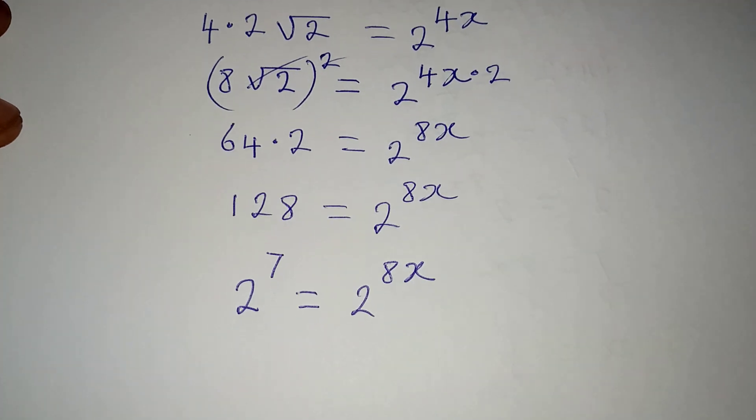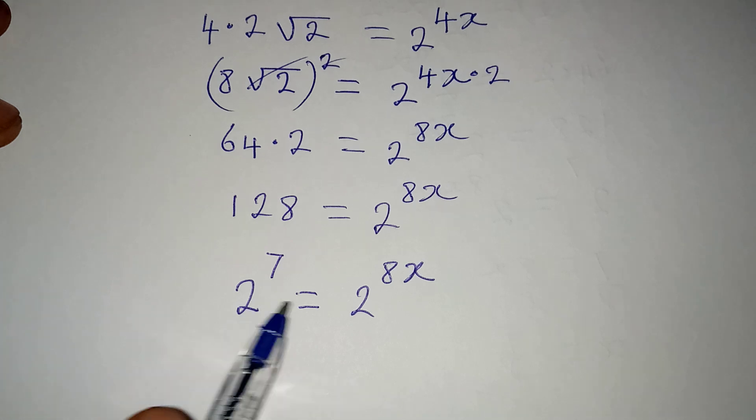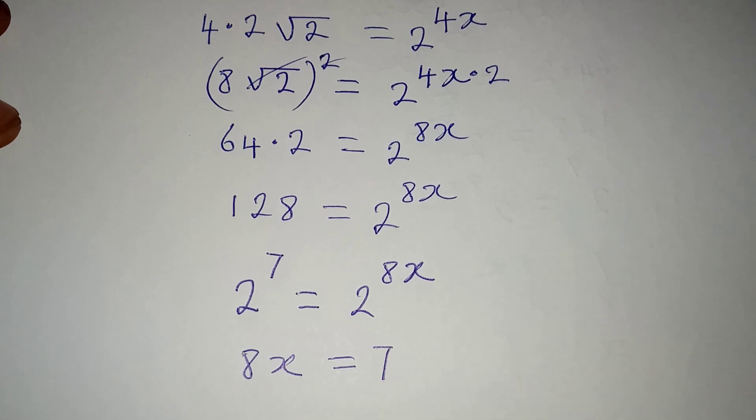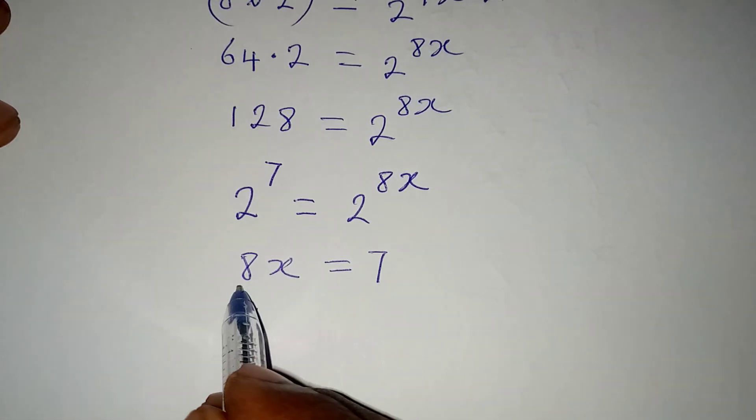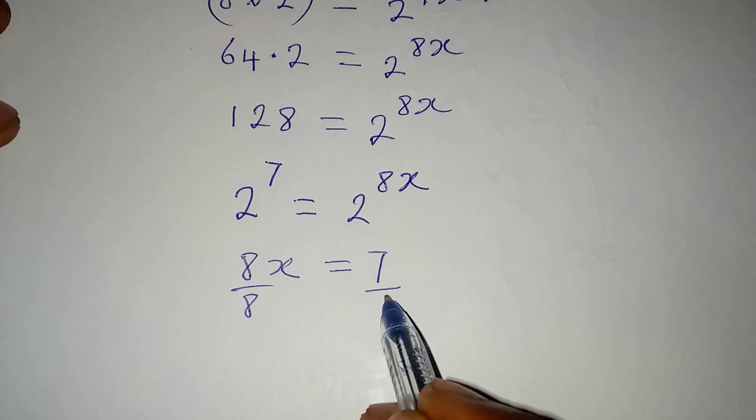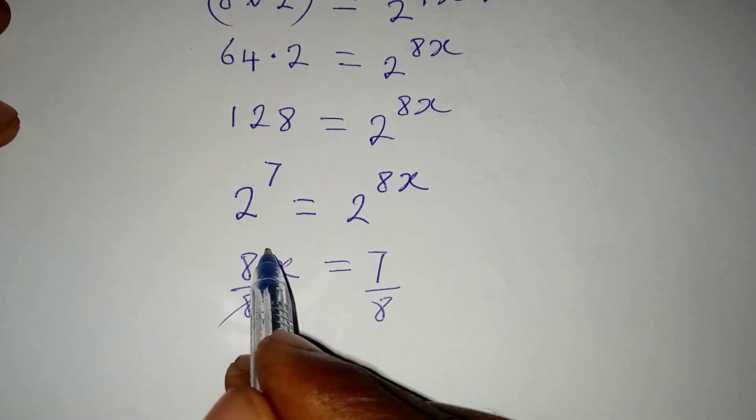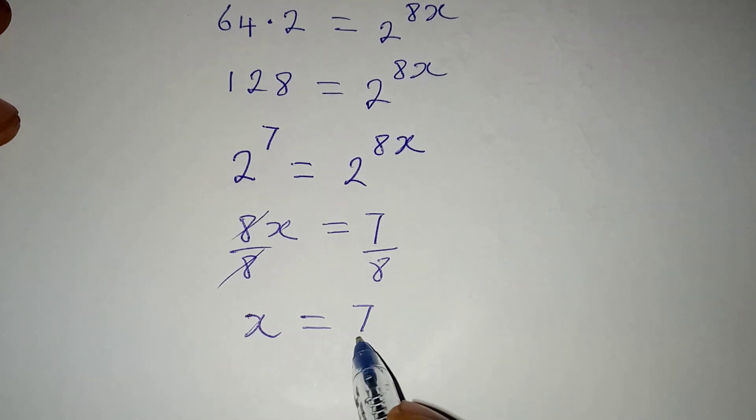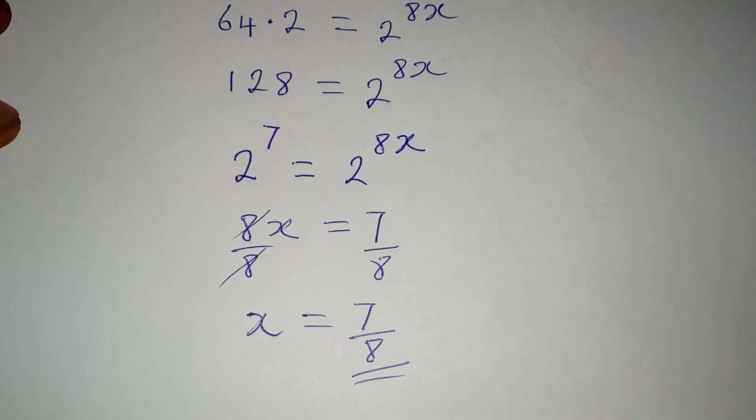And now, we can equate the powers, because the bases are the same, meaning that 8x is actually equal to 7. And from here, I will divide this by 8 and divide this by 8. This cancels this, and then x is equal to 7 over 8. So, this is the value of x that satisfies the equation. Thank you for watching.